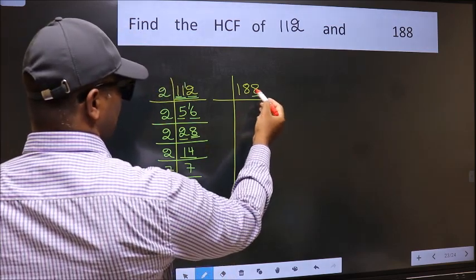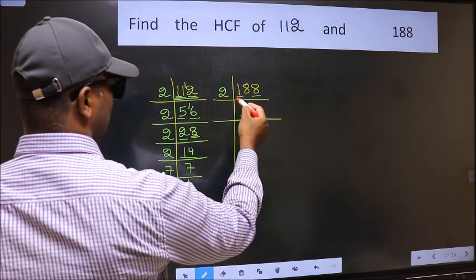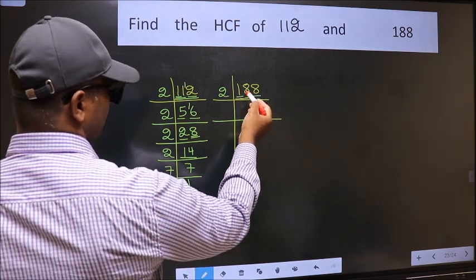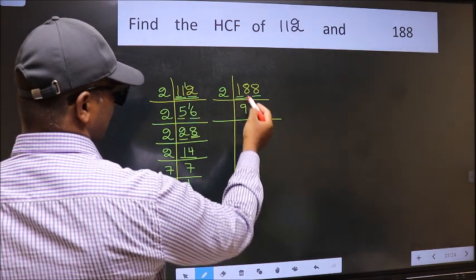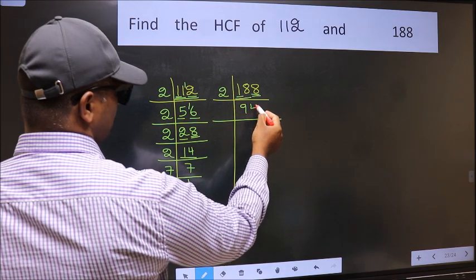Last digit 8, even, so take 2. First number 1 is smaller than 2, so take 2 numbers: 18. When do we get 18 in the 2 table? 2 times 9 is 18. The other number 8, when do we get 8 in the 2 table? 2 times 4 is 8.